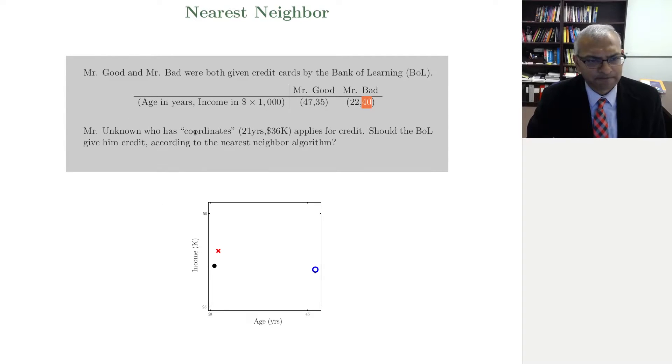Now you've got Mr. Unknown who comes, and we want to decide whether to give Mr. Unknown credit. Mr. Unknown's coordinates are: he's 21 years old, so very similar to Mr. Bad, and his income is 36K. He's the black dot here. His income is very similar to Mr. Good, but his age is very similar to Mr. Bad. I've plotted the data for you here. I'm going to ask you to put on your nearest neighbor learning algorithm hat and tell me, should we approve the black dot? Should we approve Mr. Unknown or not? I'll give you one, two, three, four, five seconds. It's clear. The nearest neighbor to Mr. Unknown, the black dot, is a red X. So nearest neighbor says reject. Great, fantastic, no problem.